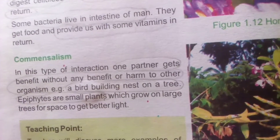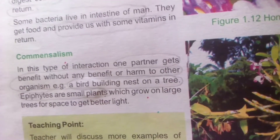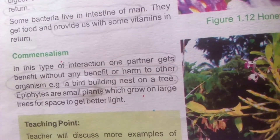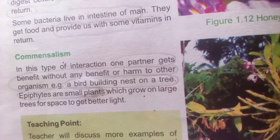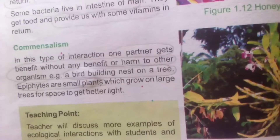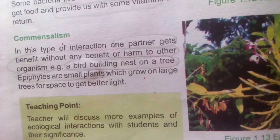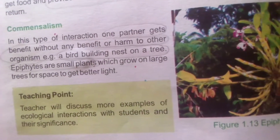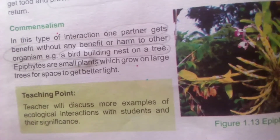Commensalism: one member gets benefit without any benefit or harm to the other organism. An example of commensalism is epiphytes — small plants which grow on large trees to get space and better light. The small plant benefits from the large tree, but the large tree gets neither benefit nor harm.